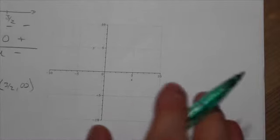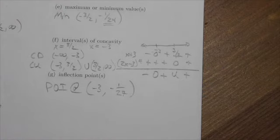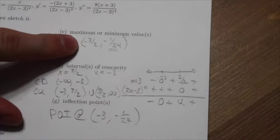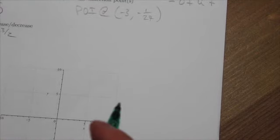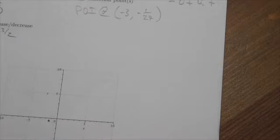All right, let's graph question 10. So first of all, let's grab some of the points here that are significant to us. First of all, we know that there's going to be a minimum at negative 3 halves, negative 1 24th. So negative 3 halves is like negative 1 and 1 half. Negative 1 24th, that is pretty darn close to the x-axis. I'm just going to put it right there.